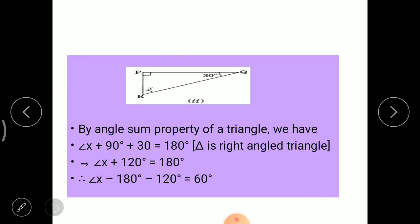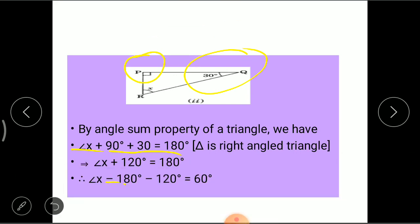Another example, here we have to find again x if the angle P is given to us 90 degrees. This symbol is represented as a 90 degree angle or right angle triangle and angle Q is 30 degrees. Again we know the sum of all interior angles is equal to 180.